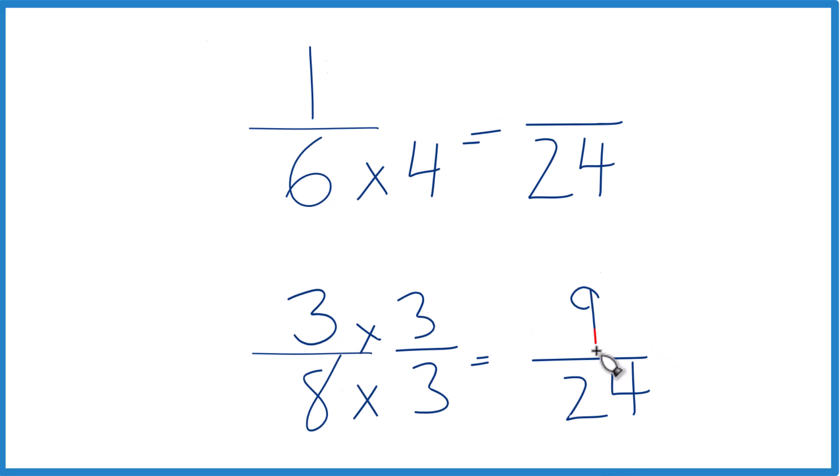3 times 3 is 9. 9/24, that's the same thing as 3/8. They're equivalent fractions.